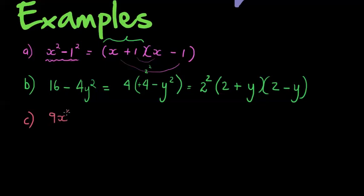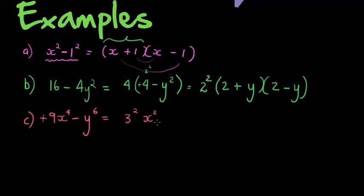How about something like 9x to the power of 4 minus y to the power of 6? We first ask: does one term have a positive and the other a negative sign? Yes — so it is the difference of two terms. Is it the difference of two squares? The 9 can be written as 3 squared. The x to the power of 4 can be written as x squared times x squared, since there are four factors — it is x squared multiplied by itself.